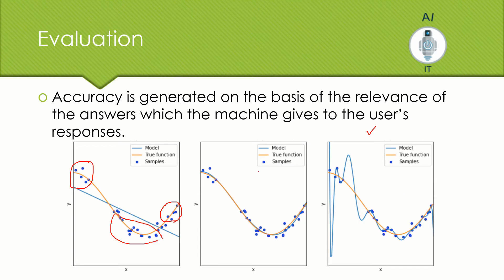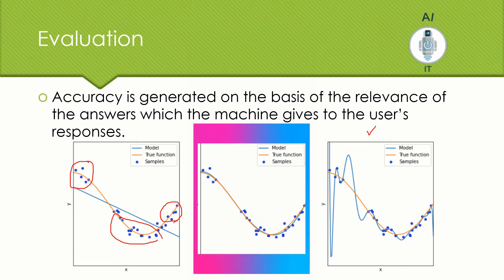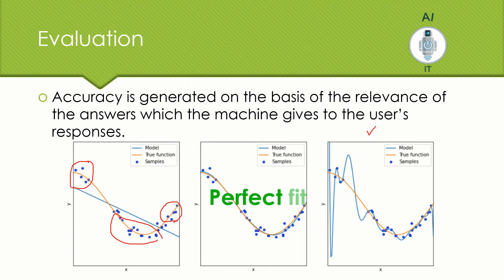Look at the one in the middle. The orange line and the blue line goes almost nearly well. The model's performance matches well with the true function. This is the optimum accuracy that one can imagine. Here we say that this is a perfect fit. You are going to evaluate model and look out for the graph which is going to be a perfect fit. This way you will evaluate a model which you have developed.